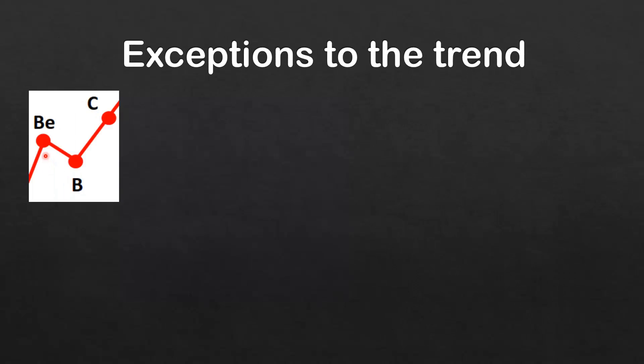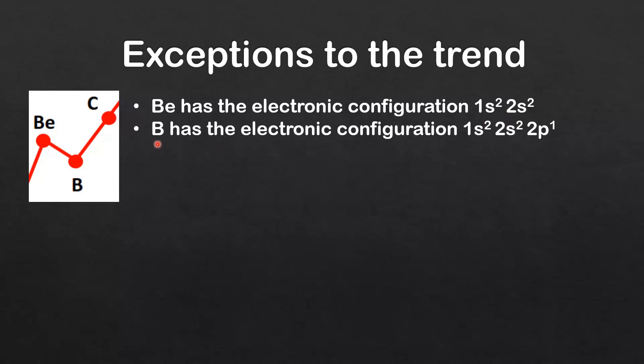As you can see we have a decrease in ionization energy between beryllium and boron, so let's have a look at the reason for that. Beryllium has the electronic configuration 1s² 2s², boron has the electronic configuration 1s² 2s² 2p¹.